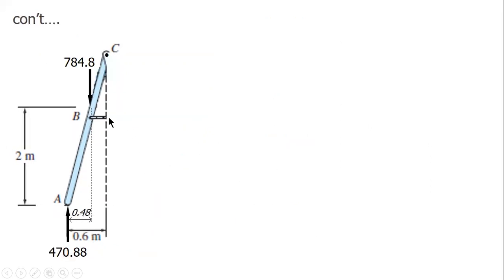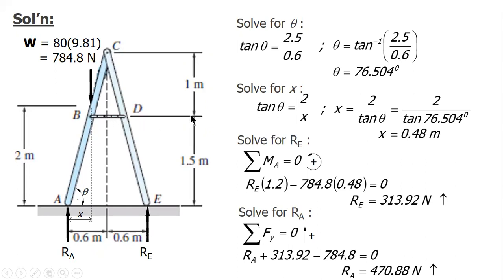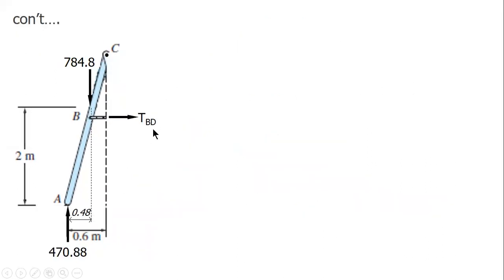And then you have tension BD. Now the distance of TBD, the perpendicular distance of TBD to C, is 1 meter.